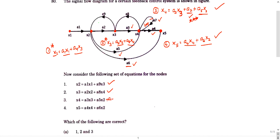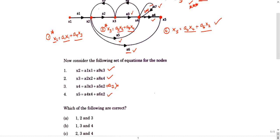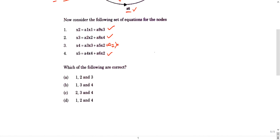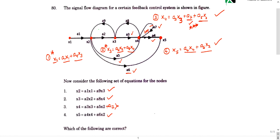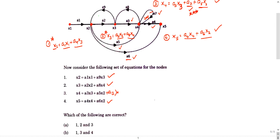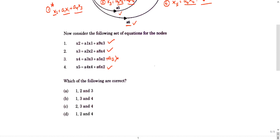x5 is nothing but a4x4 + a6x2, that is absolutely correct. So what are the correct choices? 1, 2, 4 are the correct choices. You may feel like 1, 2, 3, 4 all are correct, but the third one is incorrect. Please check that. It's a self loop, it should not be included. So 1, 2, 4 is the right choice, option D is the right choice.